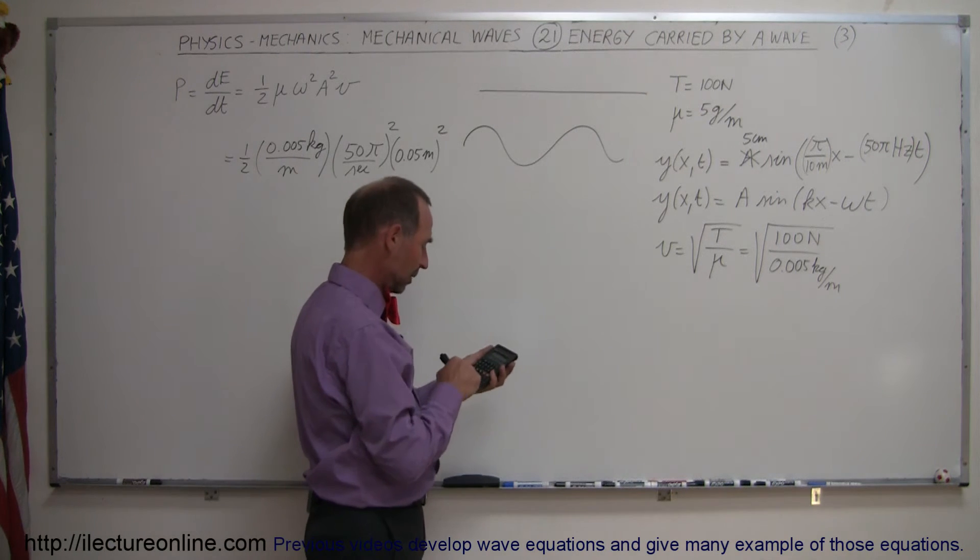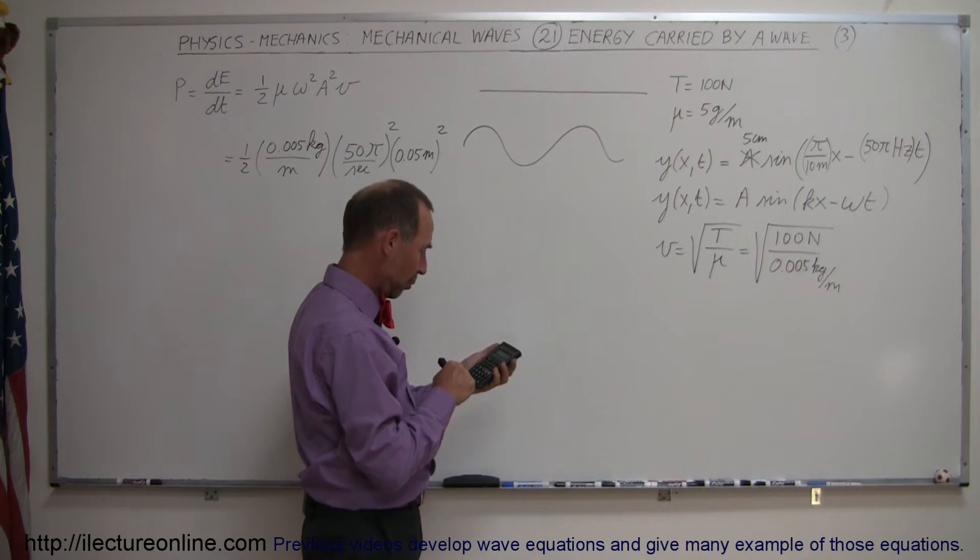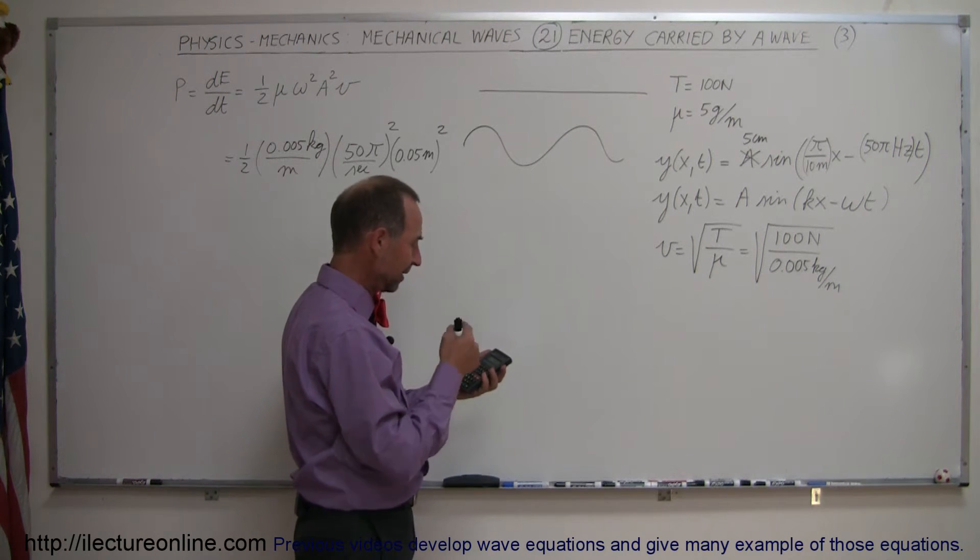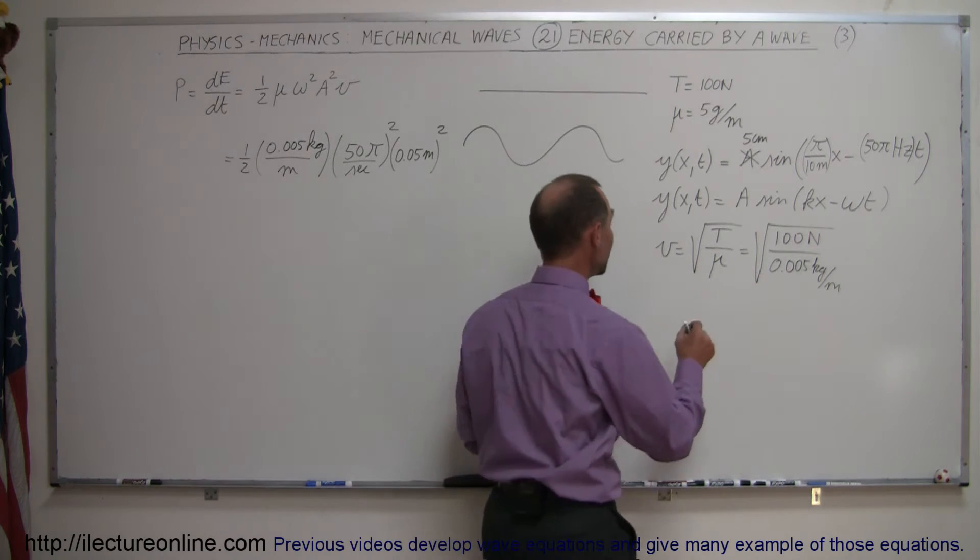Then, what we can do is, we can take the 100, the 100 divided by 0.005, take the square root of that, and so it gives me a velocity of 141.4 meters per second.